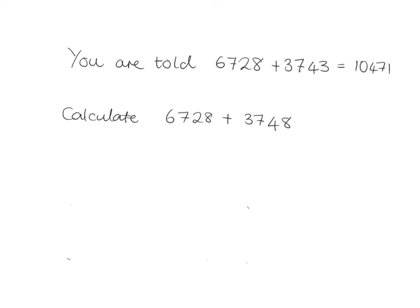Okay, so let's go over that. Did you see that really the only difference between these two things is that in this one you've got a three, and in this one you've got an eight? So really, you can see that what you've done is you've added on five more. So what's your answer going to be? It's just going to be five more, so your answer is 10476. See what I mean about finding a quick way rather than going through the whole calculation?